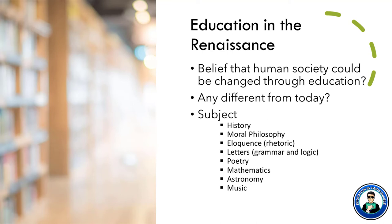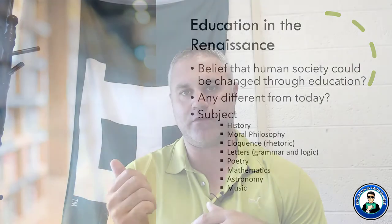The type of education you would receive would be one in history, moral philosophy, eloquence, letters like grammar and logic, poetry, mathematics, astronomy, and music. Going back to our previous lesson on the characteristics of what a noble should be — that's the Castiglione piece, the Book of the Courtier — a lot of these things actually fall into there. A noble would have all of these, plus be able to play an instrument, and be skilled in fighting and government too.